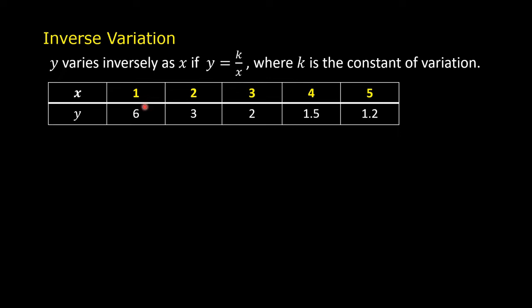1 times 6 is 6, 2 times 3 is 6, 3 times 2 is 6, 4 times 1.5 is 6, 5 times 1.2 is 6. So, xy is equal to 6. If you divide both sides by x, you get y is equal to 6 over x. This is in the form y equals k over x, where k is equal to 6.